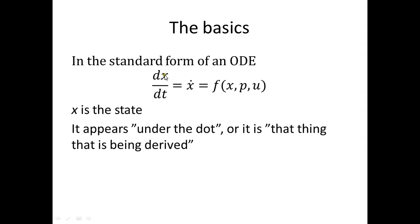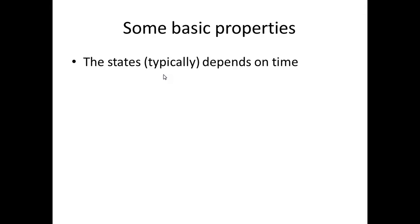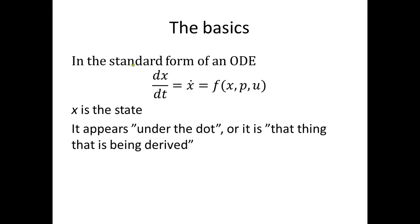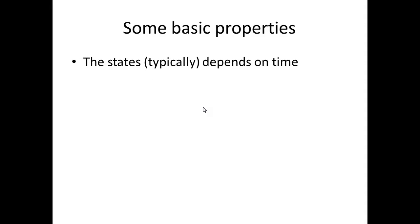The states are the things that we have the time derivative of. The first key property is that the states typically depend on time, simply because they have a time derivative. Unless f here is constantly equal to zero — which sometimes it is, but typically it's not — f is a non-zero function, and then x has a time derivative, which means as you move forward or backward in time, x will change. So x will typically depend on time.